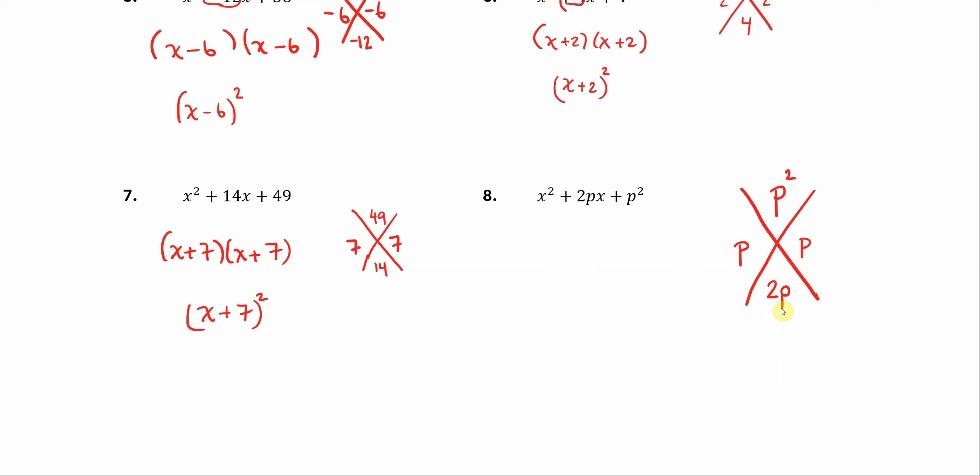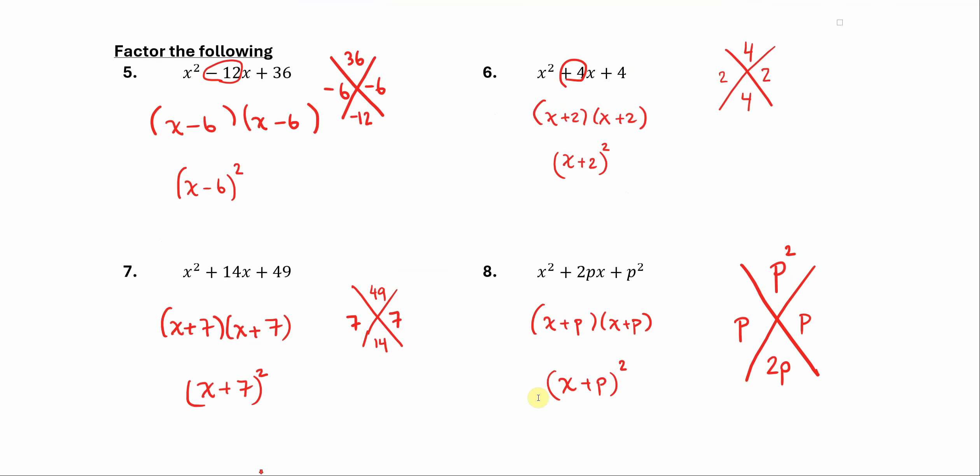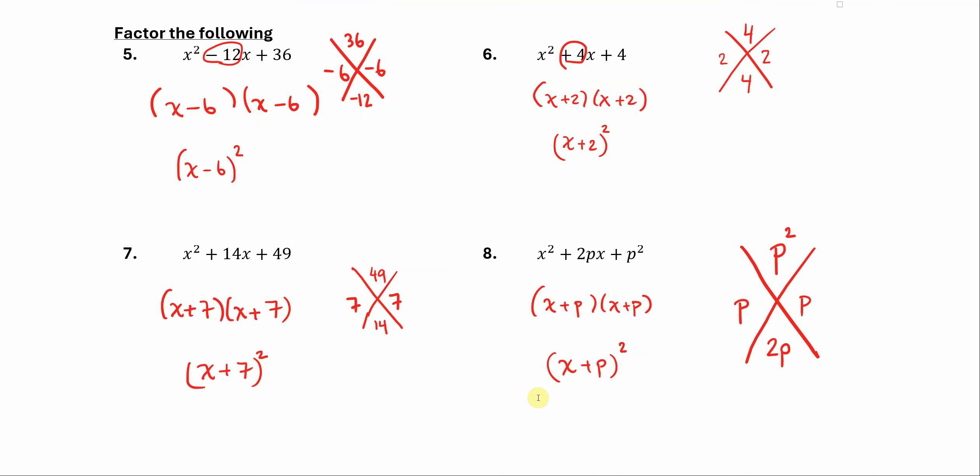And of course, the answer to this would be p and p, because if you add these two up you get 2 times p, and if you were to multiply them you get p squared. So when we factor, we get x plus p times x plus p, which is the same thing as x plus p quantity squared, just like we had before.